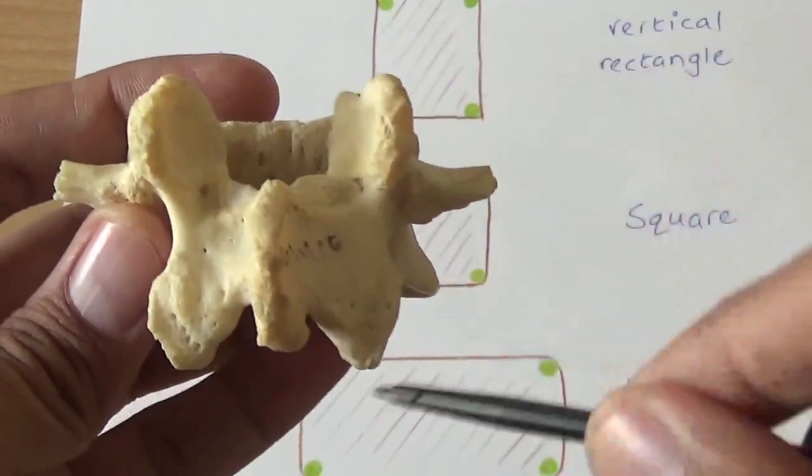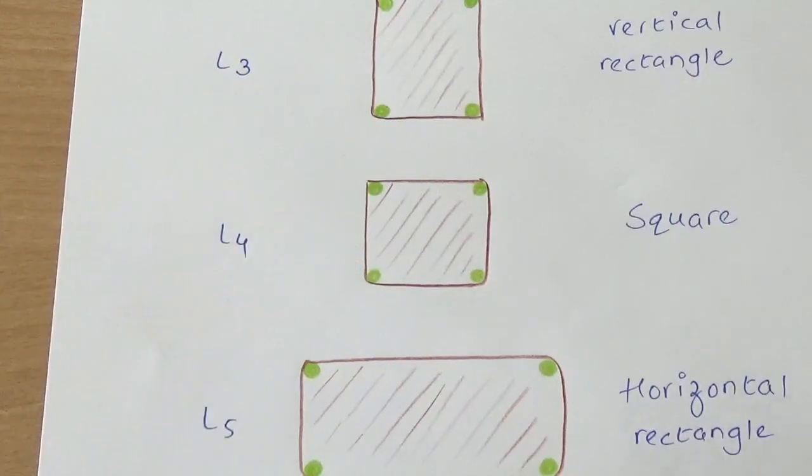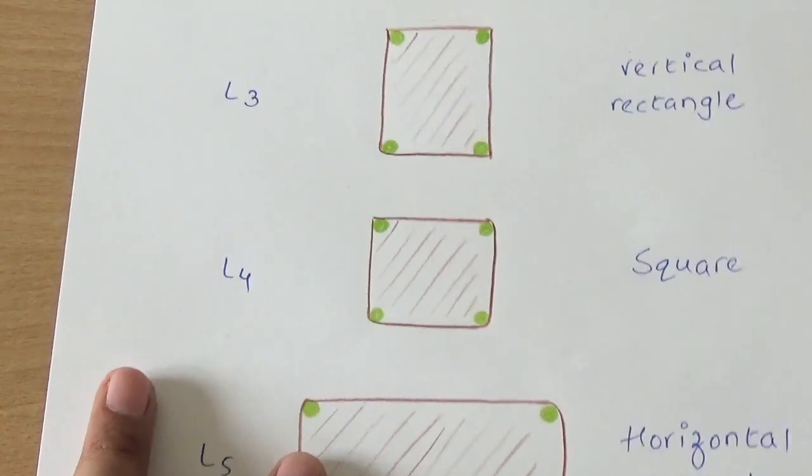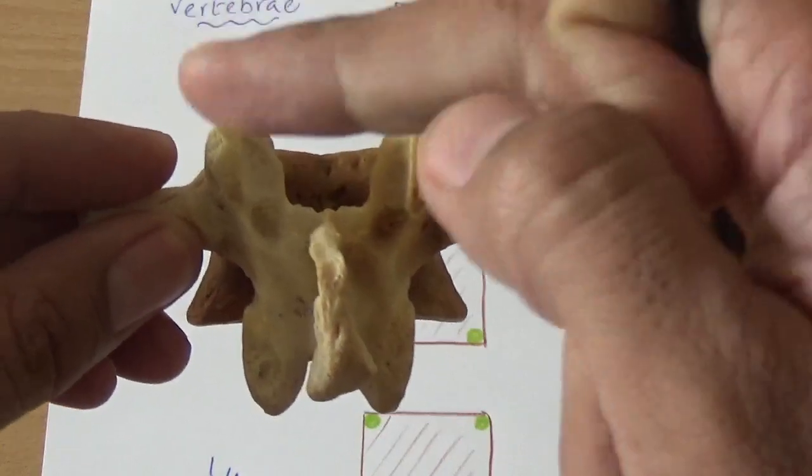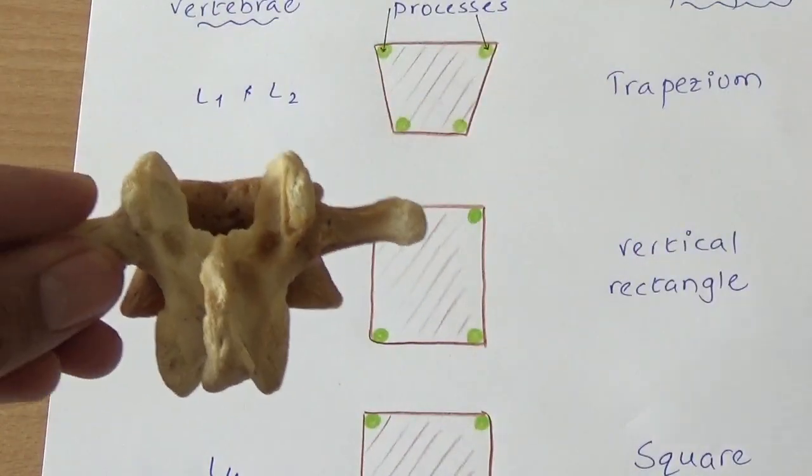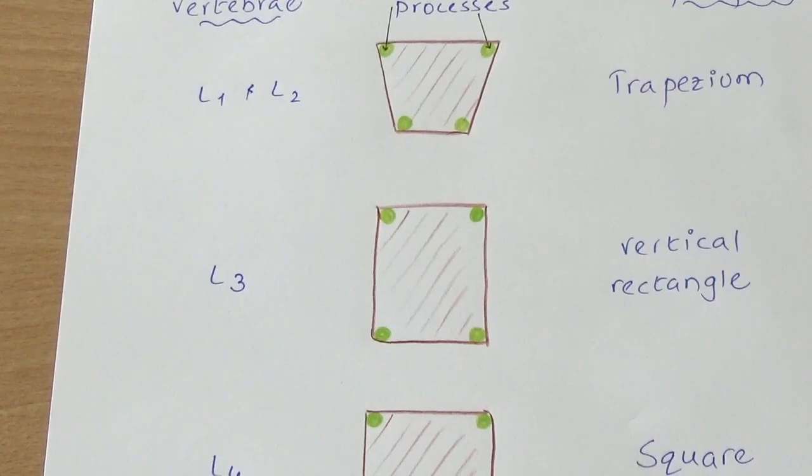Similarly, L3 will form a vertical rectangle. Let me show you L3 over here. You can imagine a vertical rectangle, right? The distance between the two superior and two inferior articular processes is different.